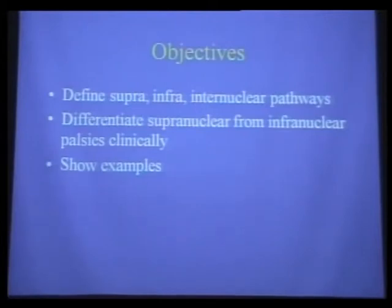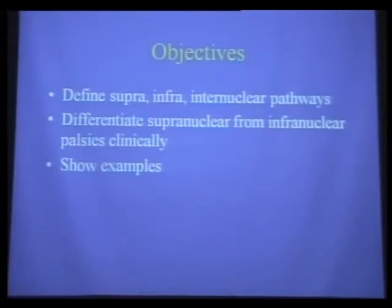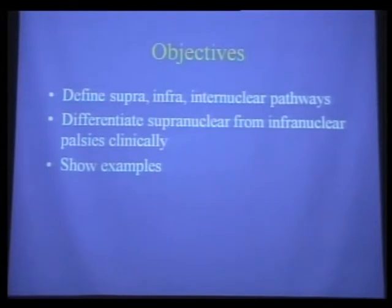That differentiation is done by driving the system—normally with the vestibulo-ocular reflex, which is the doll's head maneuver—and convergence for horizontal problems like the INO and the one-and-a-half syndrome. Sometimes we can get the eyes to converge, which shows that the muscle and the junction and everything along the nucleus can fire, and that the supranuclear and internuclear connections are what's bad.